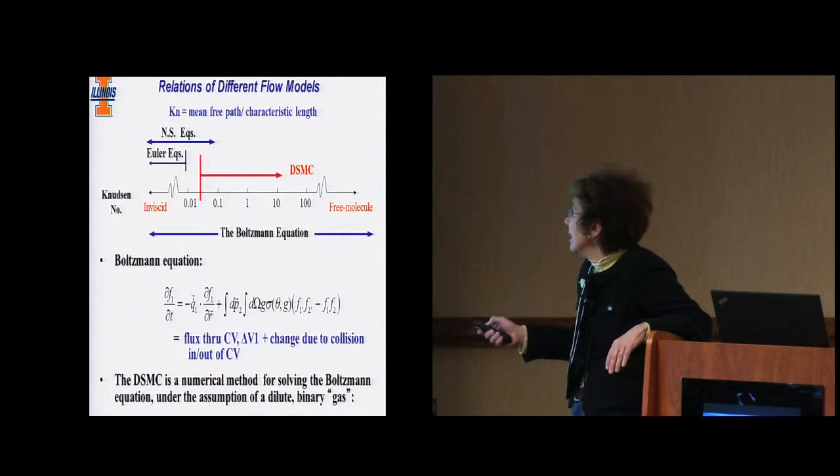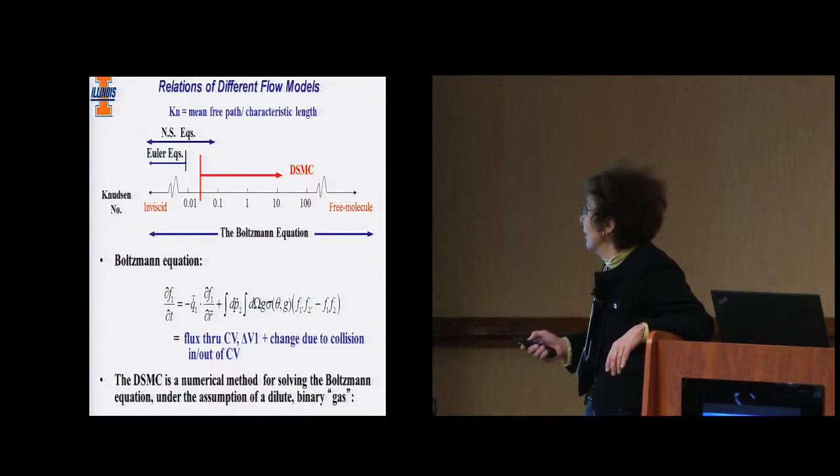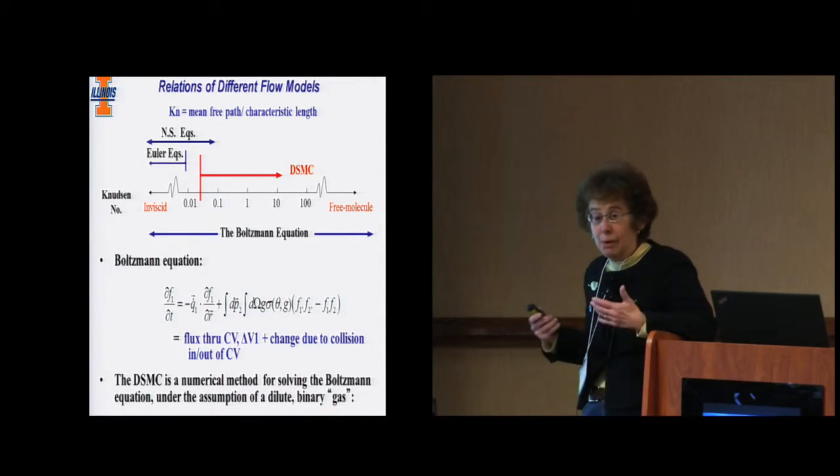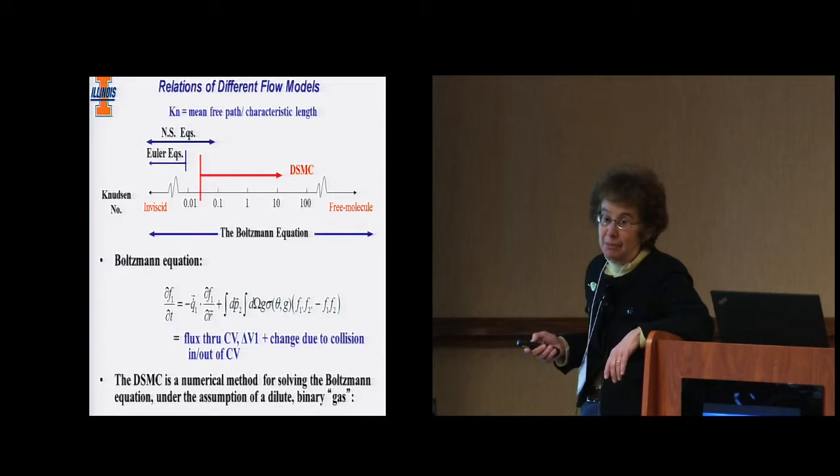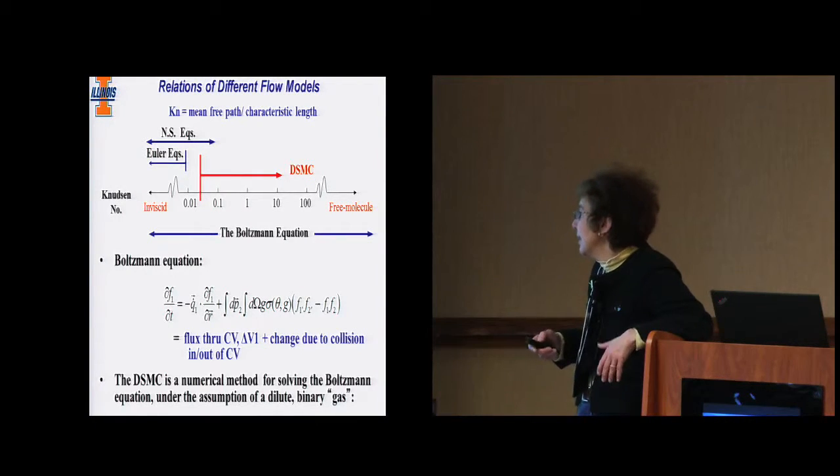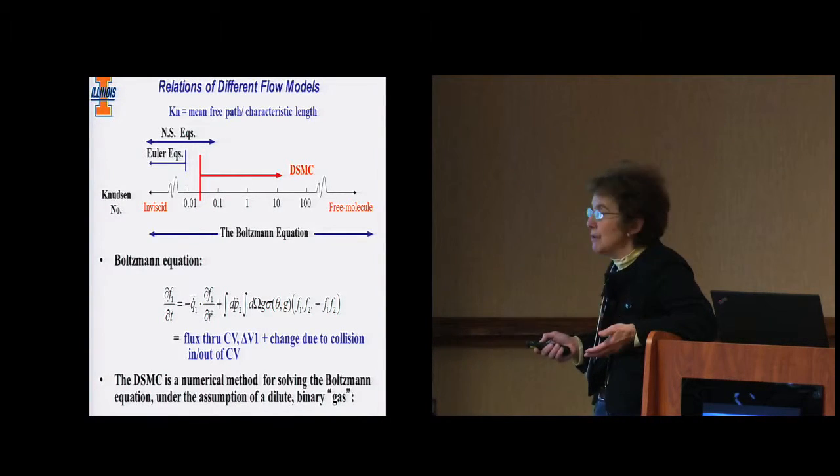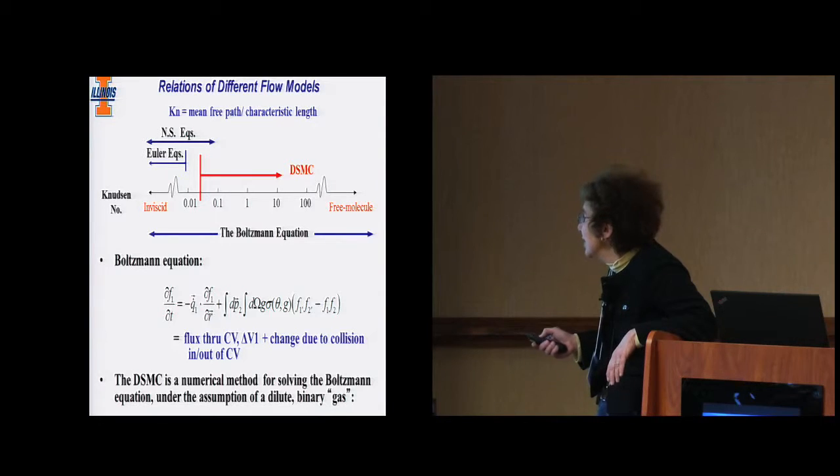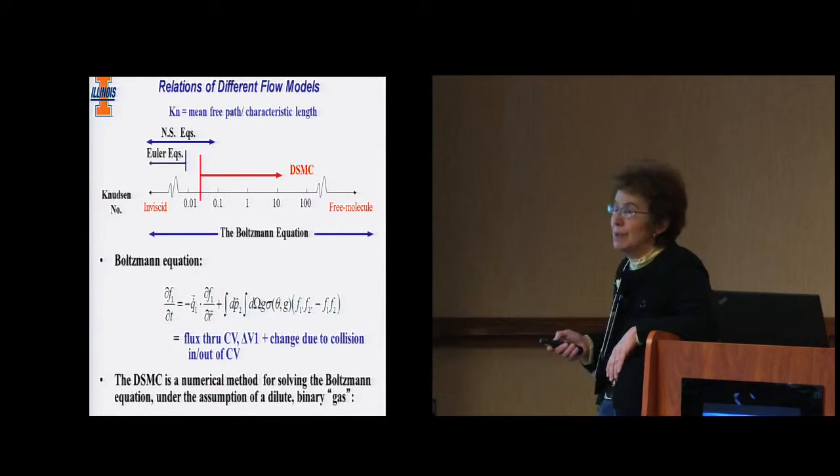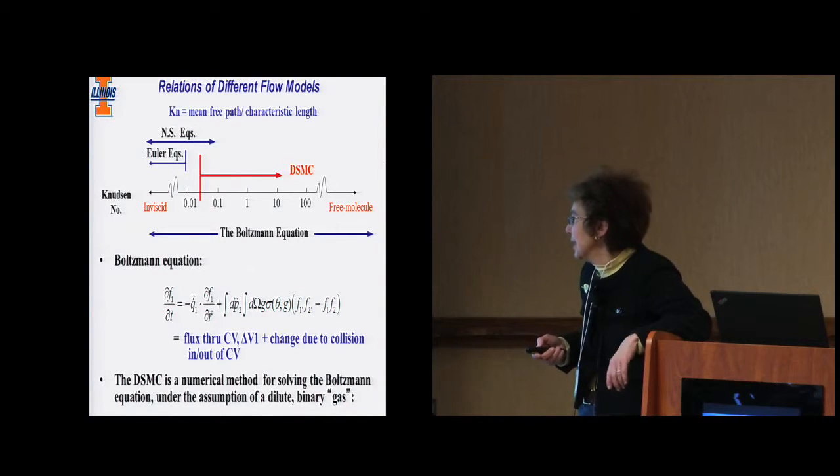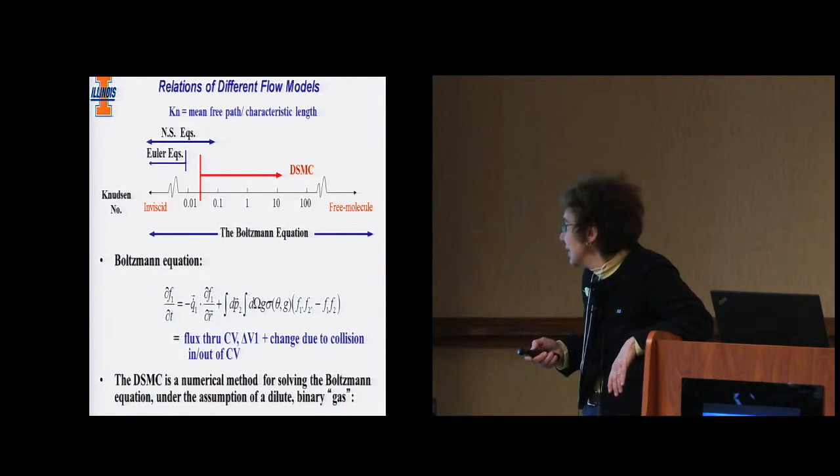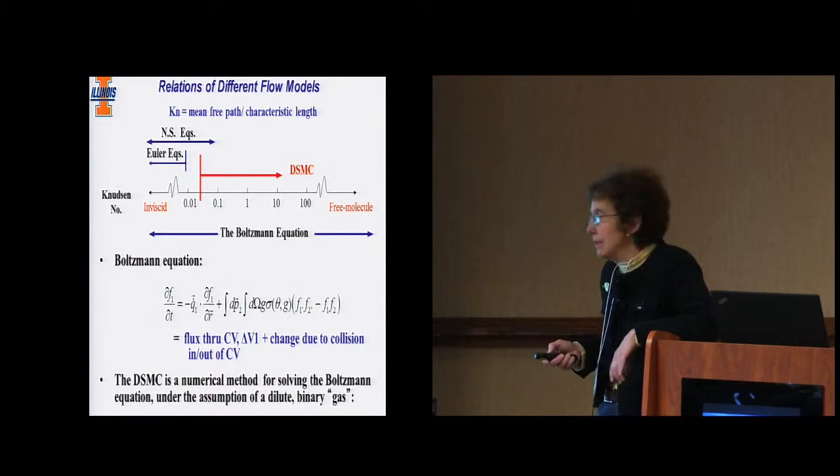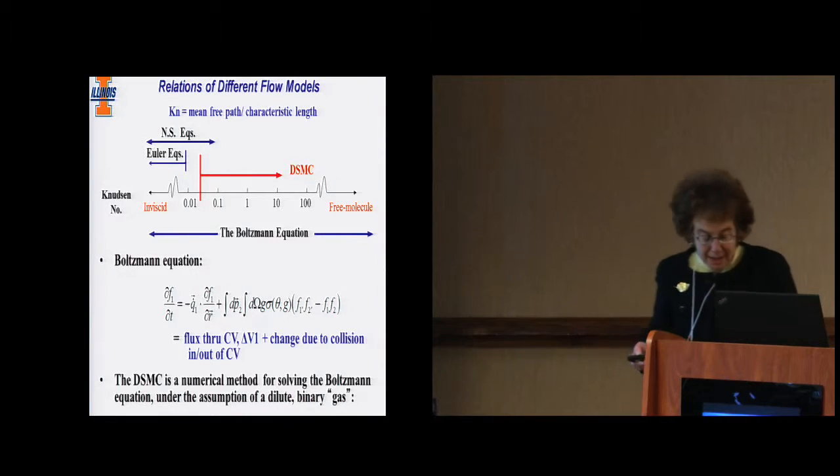The stuff that is somewhat higher is known as direct simulation Monte Carlo. This line should be a fuzzy line. Regardless of where your problem lies in this spectrum, the general solution is solved by the Boltzmann equation of transport. Unfortunately, the Boltzmann distribution function transport equation is not easy to solve. It's an integral differential equation.